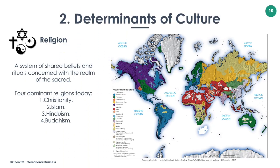Religion may be defined as a system of shared belief and ritual concerned with the realm of the sacred. Among the thousands of religions in the world today, four dominate in terms of number of adherents: Christianity, Islam, Hinduism, and Buddhism. Religion plays an important role in doing business both domestically and internationally. For example, in Islam, there is a requirement for halal food dietary. Therefore, fast food restaurants, commonly originating from the US, have to adapt their menus in Islamic countries in order to gain acceptance by the government and the people.